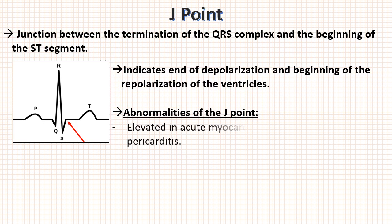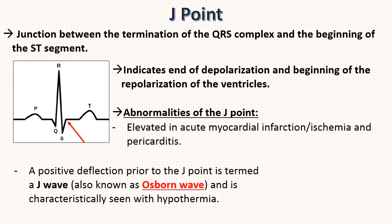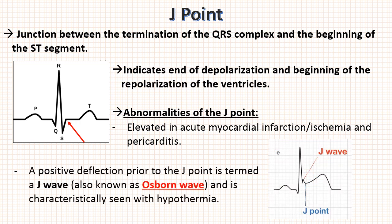Abnormalities of J point: elevated in myocardial ischemia and pericarditis. A positive deflection prior to J point is termed as J wave also known as Osborn wave which is typically seen in hypothermia.